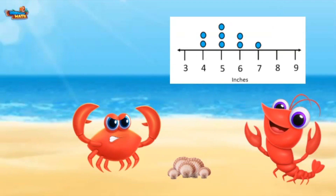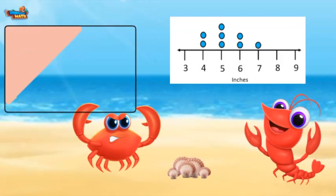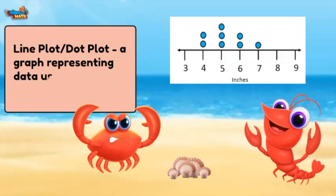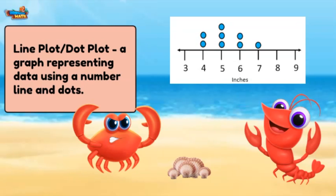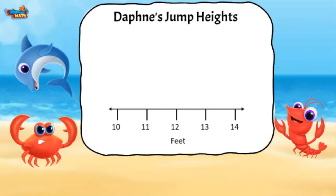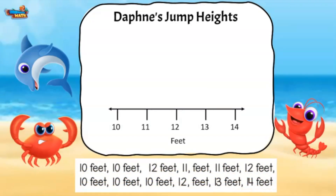Our final graph is called a line plot. Line plots are sometimes called dot plots as well. It is a graph that represents data using a number line and dots. Hey, look — it is Daphne, she is here to help us out today. Hi everyone! I have been practicing my jumps and keeping track of how high I go. Here is a list of measurements I have taken. Could you put them in a line plot for me? I will plot the top row.